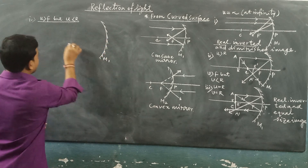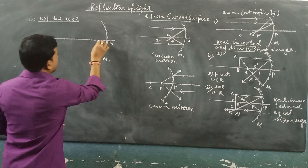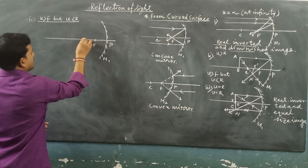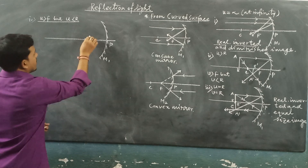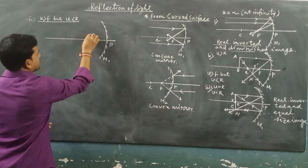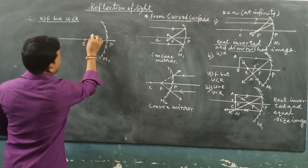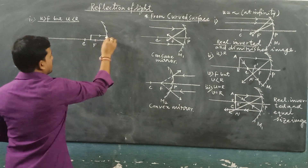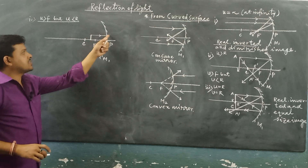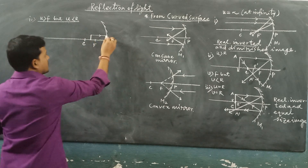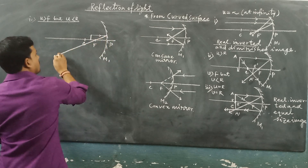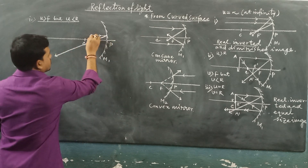This is M1. In the same way, this is P, this is F, this is C. Now the object is here. One light ray parallel to the principal axis, after reflection, passes to the principal focus — it passes to the principal focus.